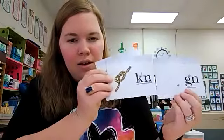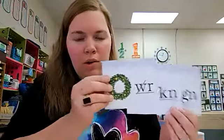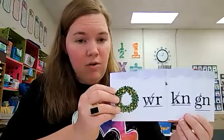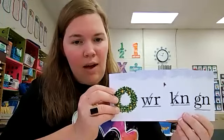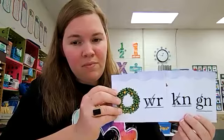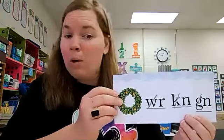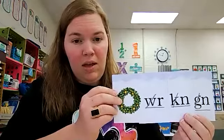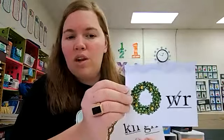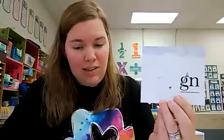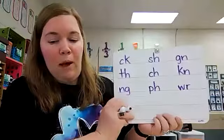Let's talk about three of these: gnat, knot, and wreath. What do you notice about these digraphs? They're all underlined because that's how we code digraphs. Why is the first letter crossed out? We don't hear them — these are called the ghost letter digraphs. We use them for spelling, but we don't say those letters when we speak. Wreath — we don't pronounce the W. Knot — the K is not pronounced. Gnat — the G is silent. Those are ghost letter digraphs.